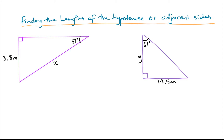In this video we want to have a look at how to find the lengths of the hypotenuse or adjacent sides of right-angled triangles. So we've got a couple of examples here.